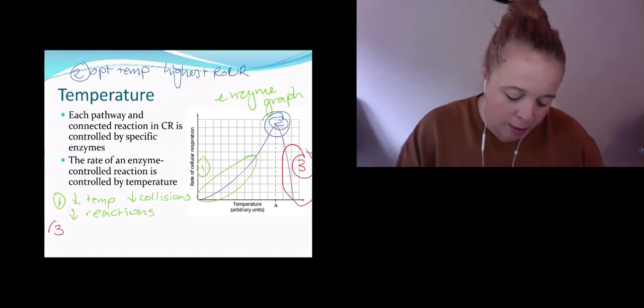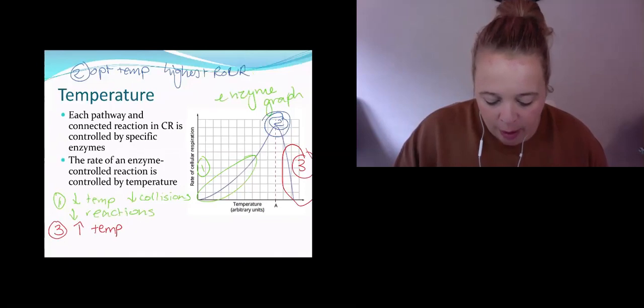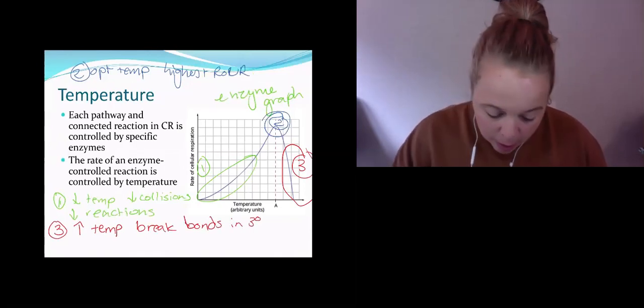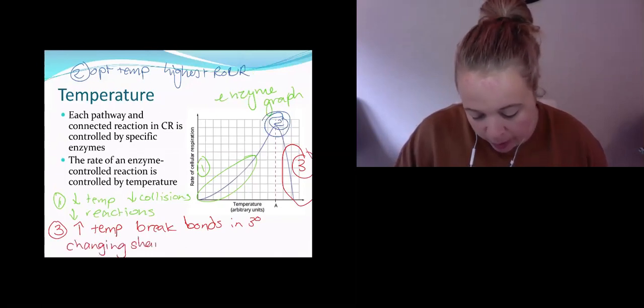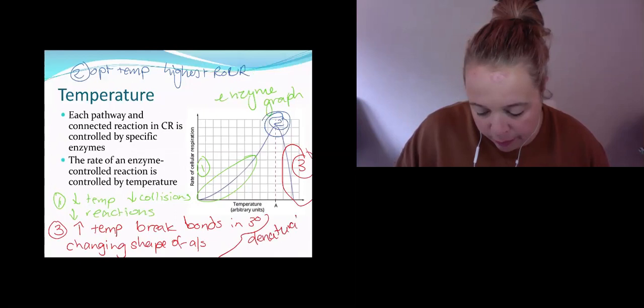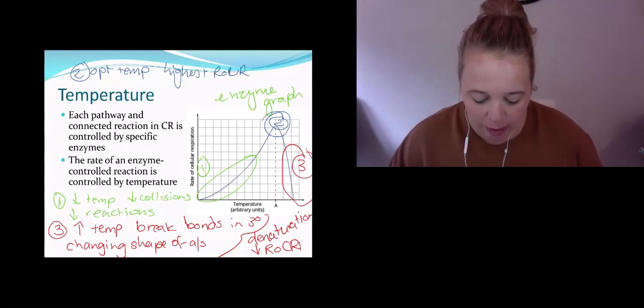And the final one is this section down here. What's happening when we get the temperature too high? Increased temp too high means that we break bonds in tertiary structure. We end up changing shape of active sites. All of this is denaturation, and that will decrease my rate of cellular respiration.